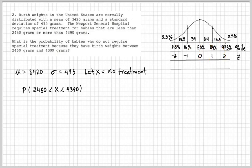So 2450 through 4390. And one of the things I like to do is to, in my template, write down the mean of my random variable, which is 3420, and then the spread is 495.